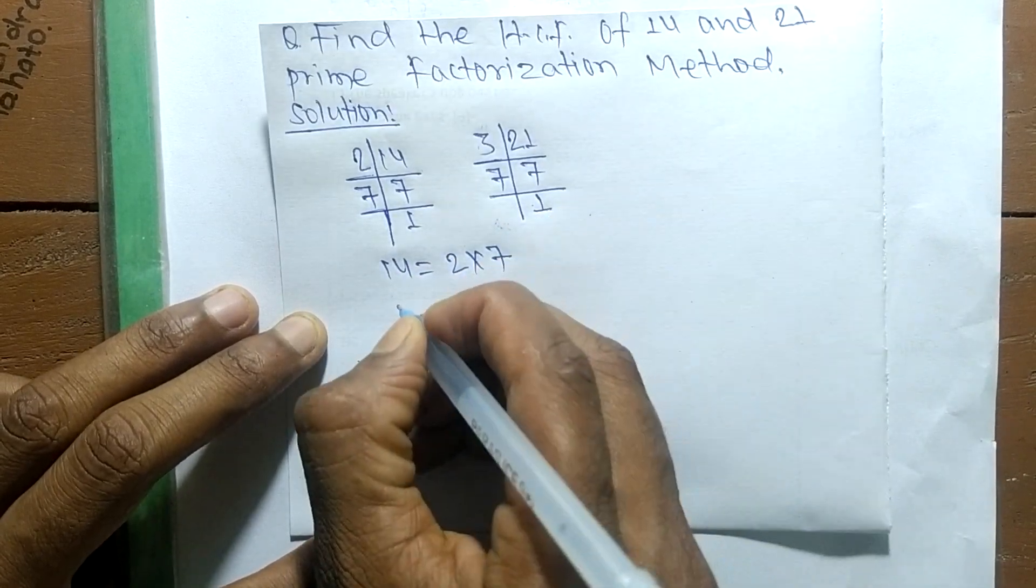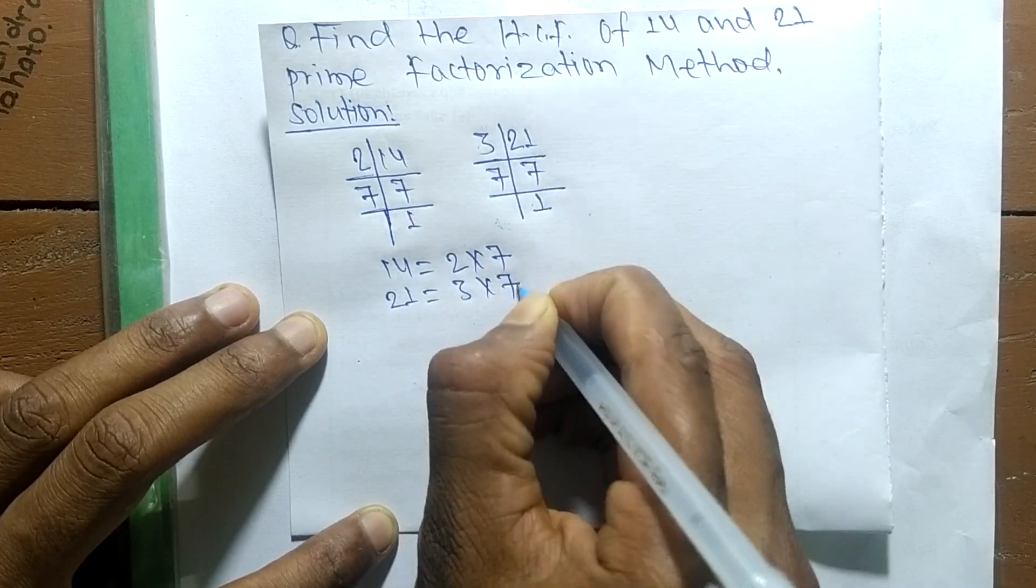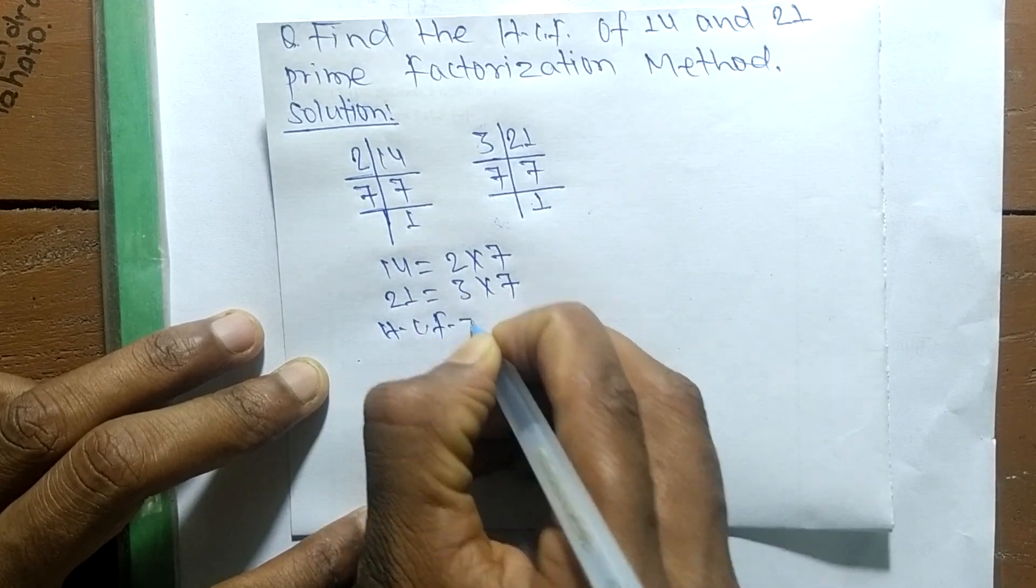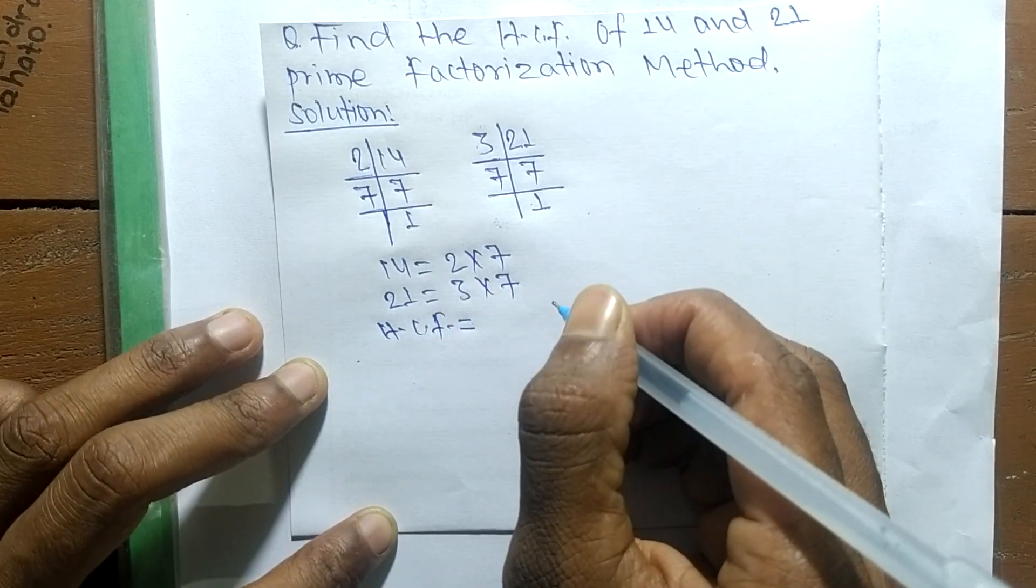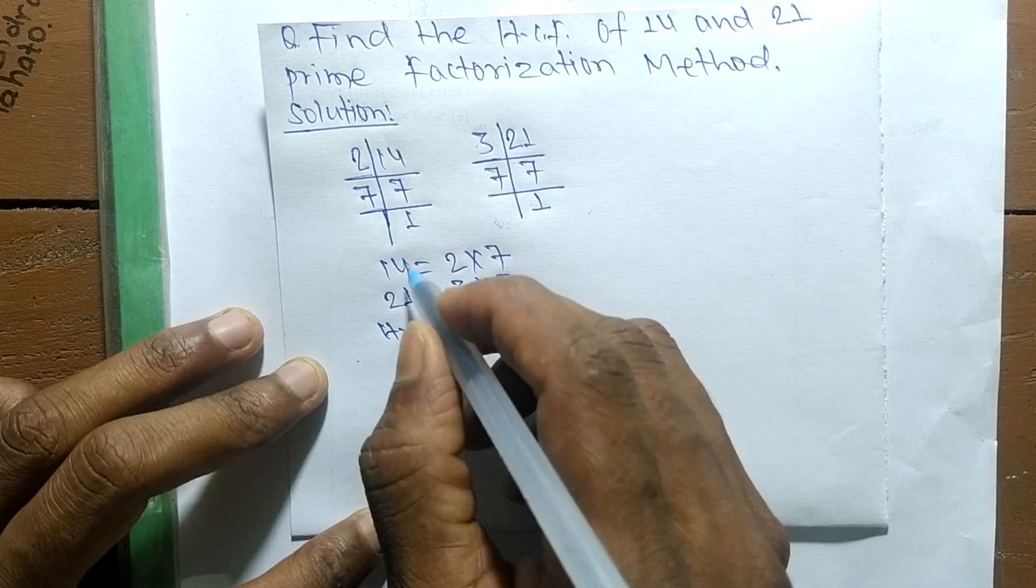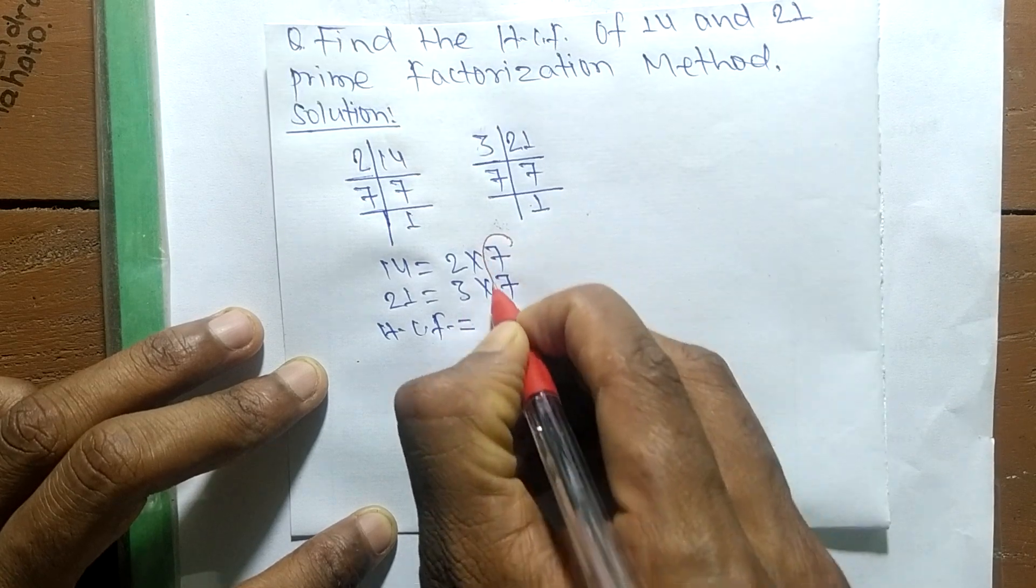And 21 is equal to 3 times 7. So its HCF is equal to... now we have to find out the common factors in the prime factors of 14 and 21. So the common factor here is 7 only.